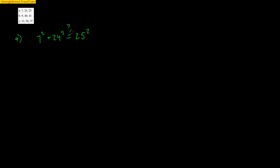So 7 squared is 49. 24 squared is 576. 25 squared is 625. And I need to see, is this true? So 49 plus 576 is 625. So we do know for sure that these are Pythagorean triples.